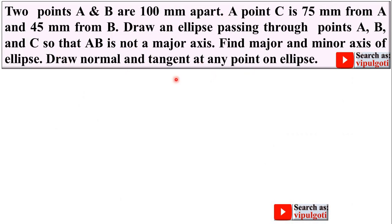First we will see the description. Two points A and B are 100 mm apart. Point C is 75 mm from A and 45 mm from B. Draw an ellipse passing through the points A, B and C so that AB is not a major axis. Find major and minor axis of the ellipse. Draw normal and tangent at any point on ellipse.